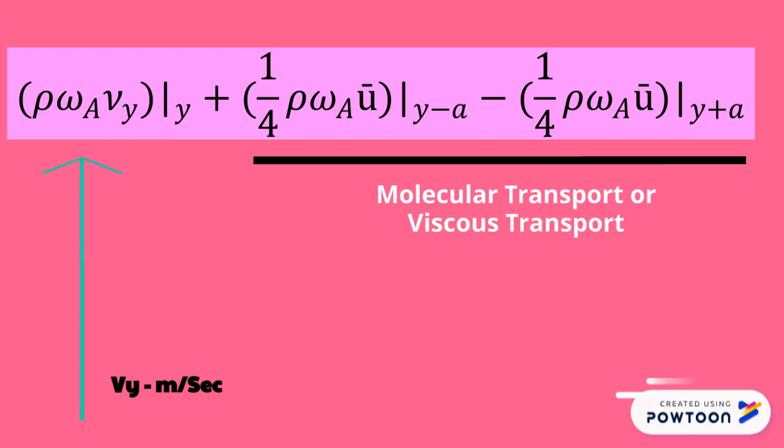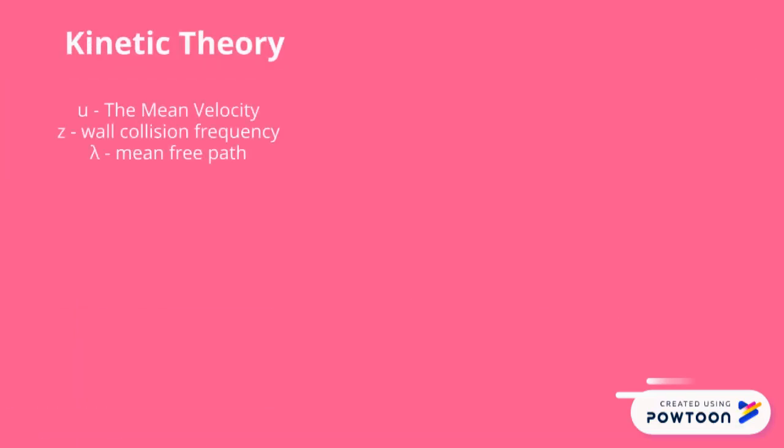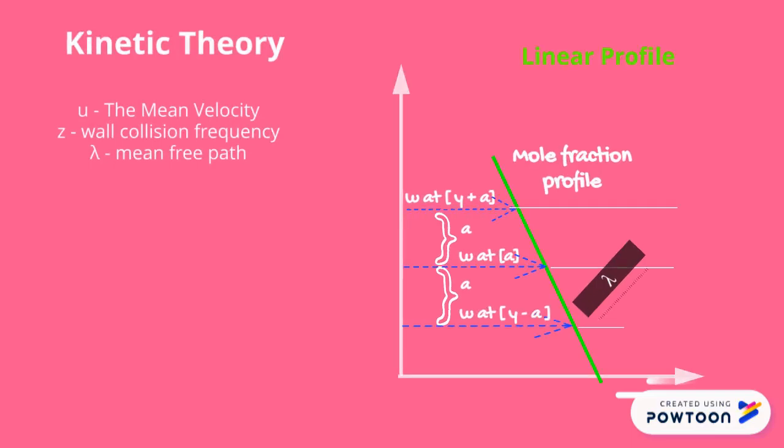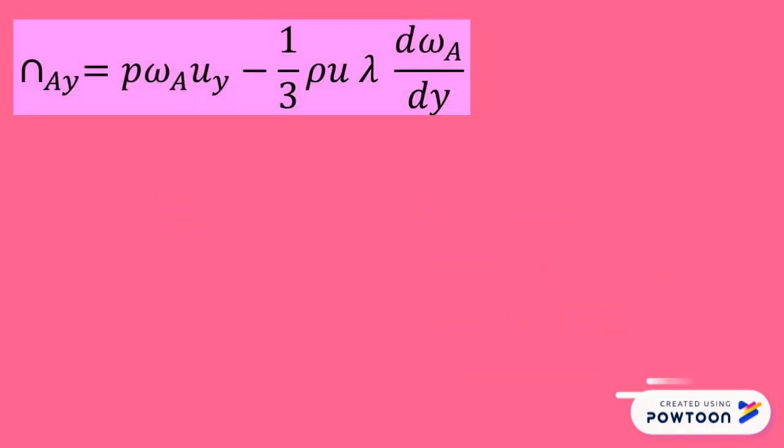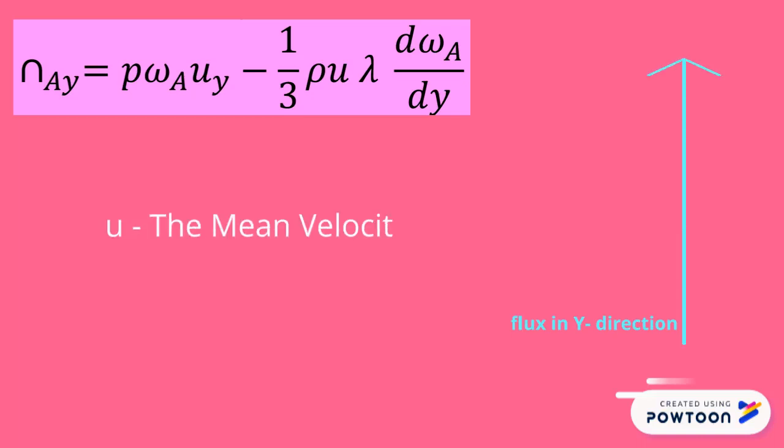Using the results of kinetic theory and assuming a linearity in concentration profile, we get the following combined equation: Na_y, which is the flux in the Y direction, equals rho*omega_A*Vy minus (1/3)*rho*U_bar*lambda*d(omega_A)/dy.